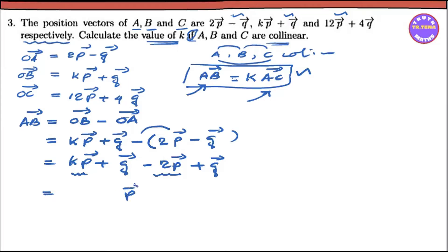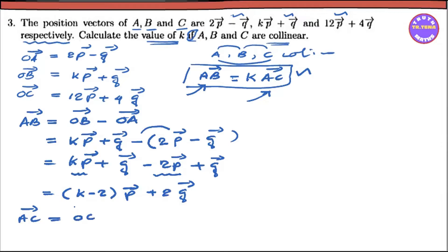We have to do the number of k vectors minus two p vectors, then the p vectors, then the q vectors, then the A vectors. AC — so in position vector formula: OC vector negative OA vector. That's OC, so it's like 12b vector plus 4q vector, negative OA vector. So we can write down the line: 2b vector plus q vector.